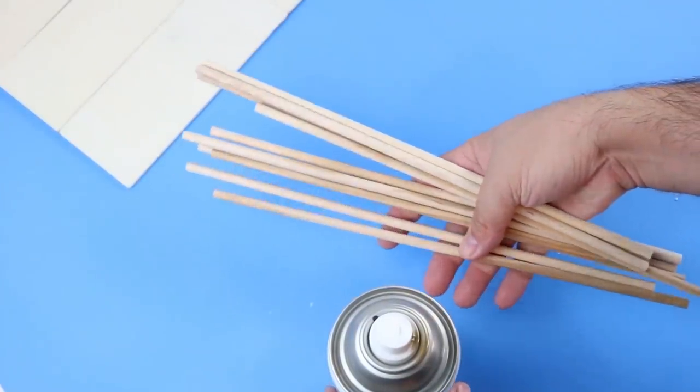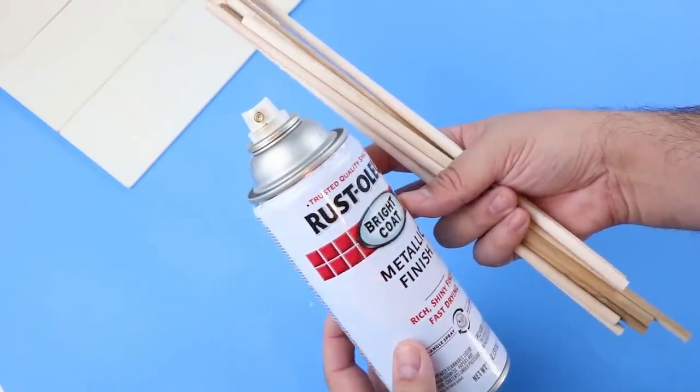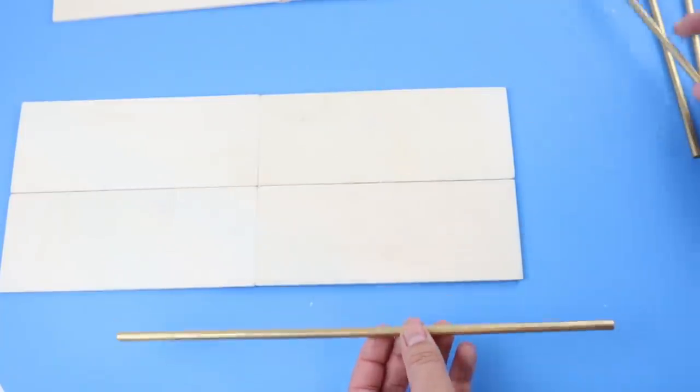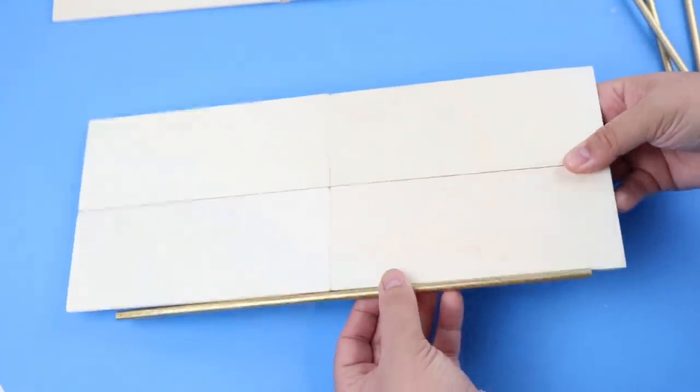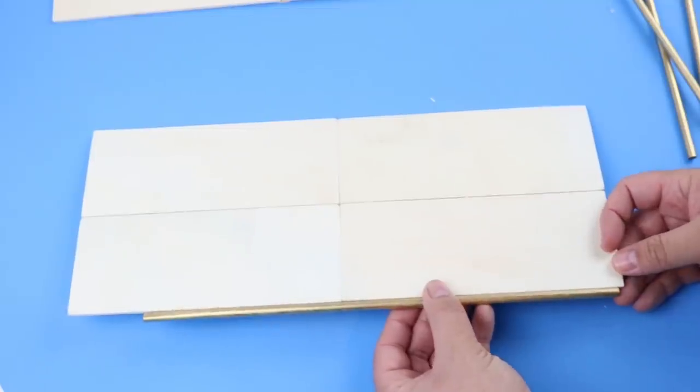Next, we can move on to our dowel rods. Now you will need two of the 12 inch packs, and I'm going to go ahead and spray paint all of these gold. And after we've created our two shelves with the four planks, we can move on to kind of creating the frame using these gold dowel rods.